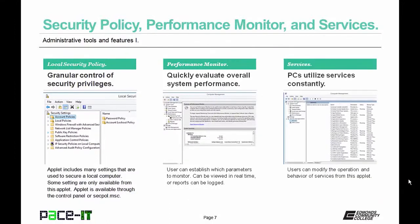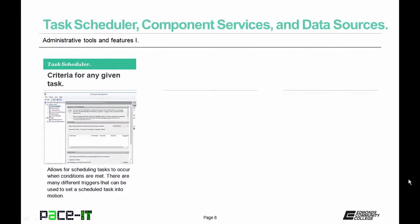Task Scheduler allows the user to schedule tasks to occur when certain conditions are met. There are many different triggers that can be used to schedule a task, and once that criteria is met, the task happens. Component services allow the user to make adjustments to COM objects. It's available in Windows XP and 7 from administrative tools, but in Vista you need to add it as a snap-in into the Microsoft Management Console.